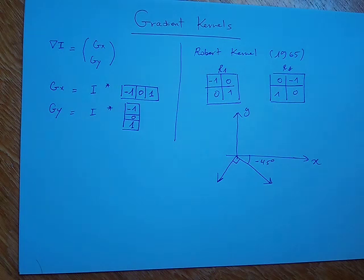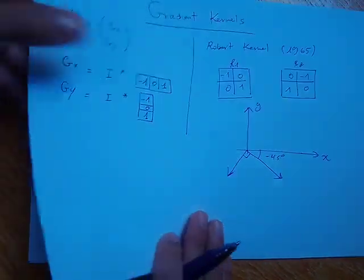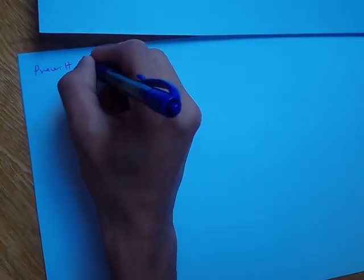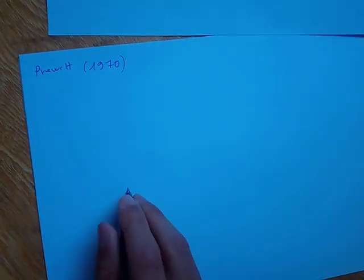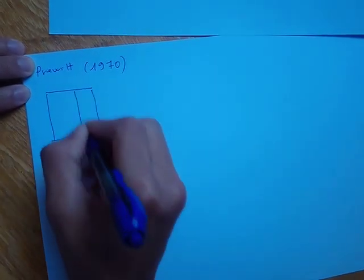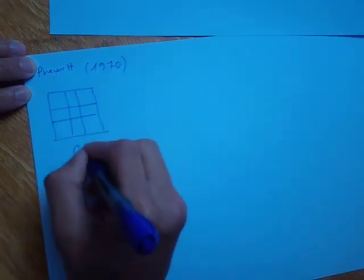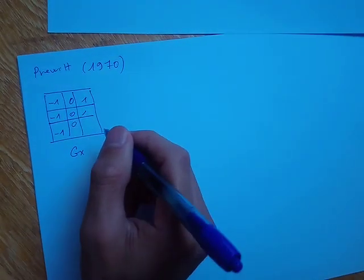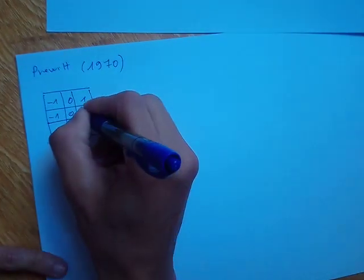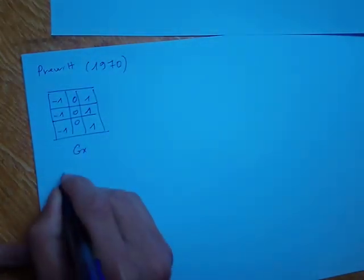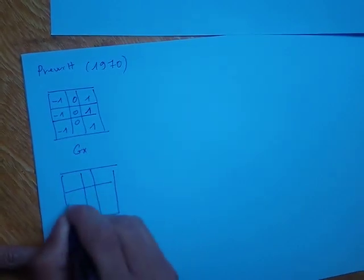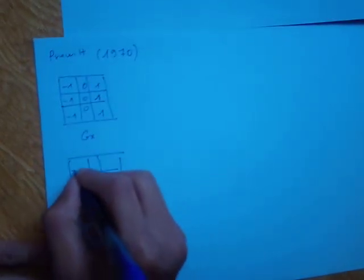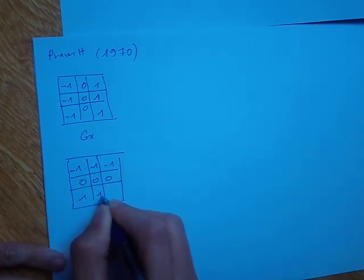I will talk about two types of kernels: Sobel and Prewitt. The Prewitt kernel was proposed five years after Roberts, in 1970. For the gx component, the Prewitt kernel is: minus 1, minus 1, minus 1 in the first column, 0, 0, 0 in the middle, and 1, 1, 1 in the last column. For the gy component, the kernel is: minus 1, 0, 1 in the top row, minus 1, 0, 1 in the middle row, and minus 1, 0, 1 in the bottom row.